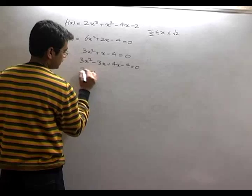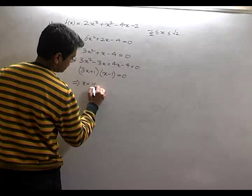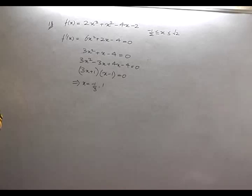This becomes 3x² - 3x + 4x - 4 = 0. From here what will we get? 3x + 1 and x - 1. This condition becomes equal to 0, that implies x is equal to -1/3, 1. These two roots I got.